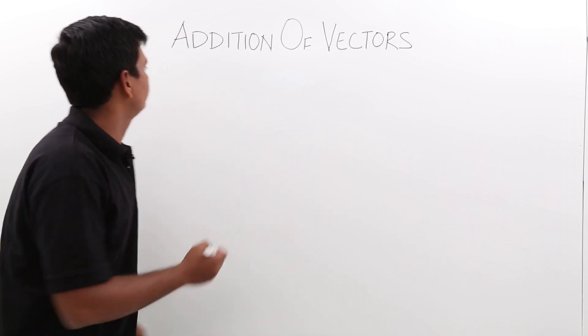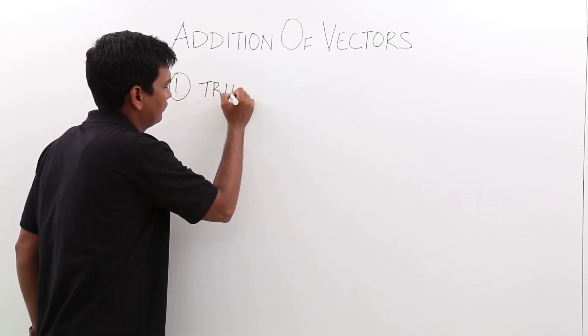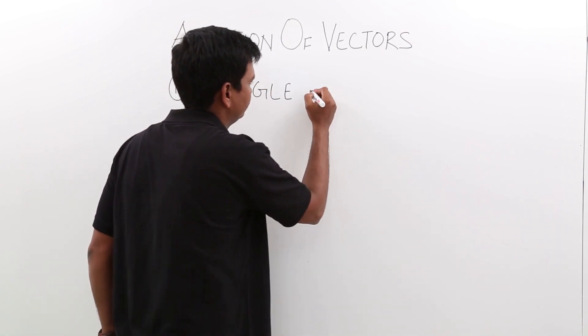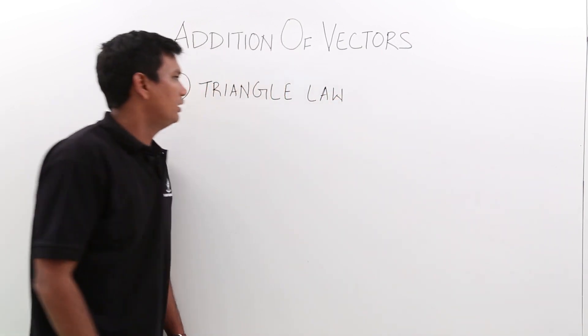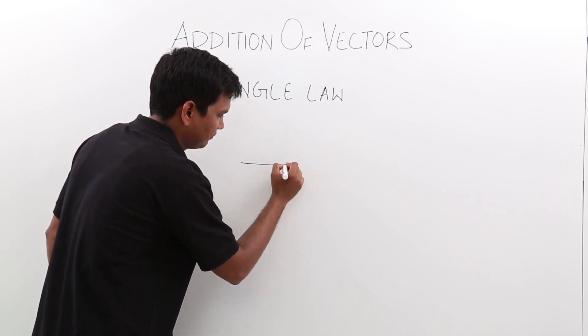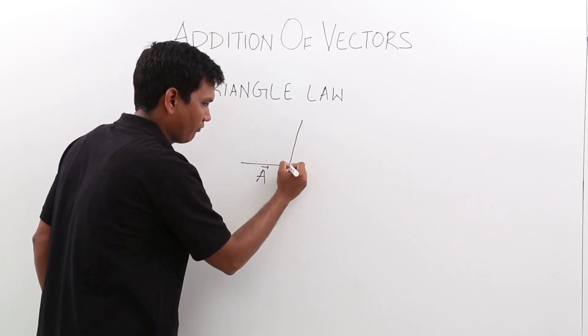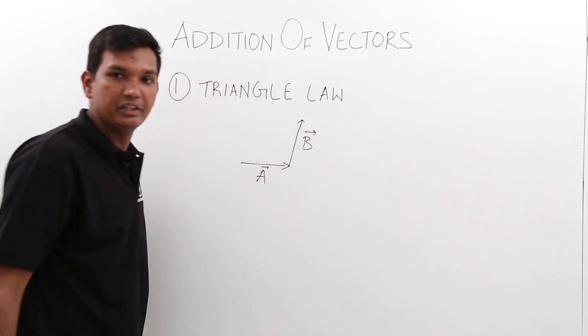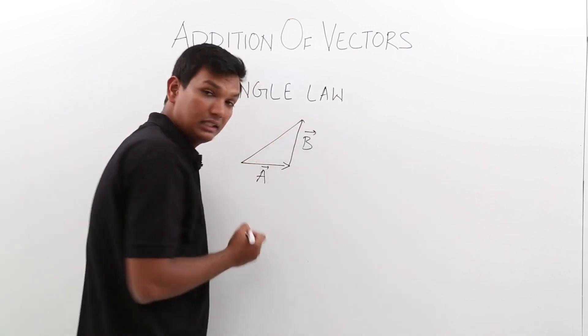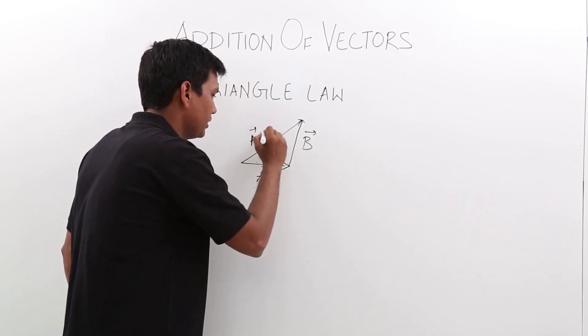Let us see one by one. Let us see triangle law of addition. Let us say that I have A vector here, another B vector here. Then the addition of A and B vector would be given by the third side which would be closing these two and the resultant would be A vector plus B vector.